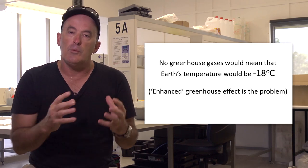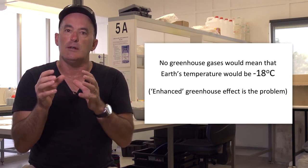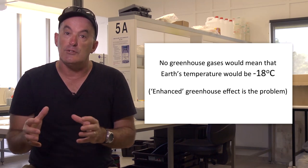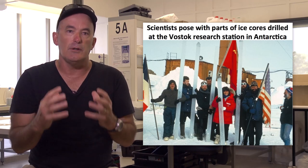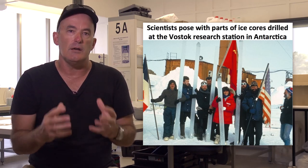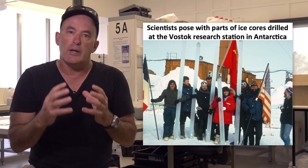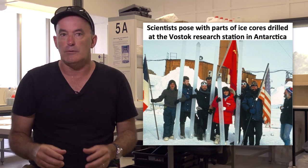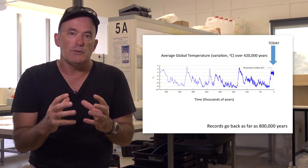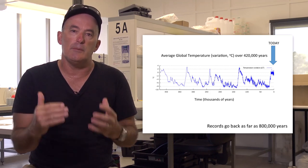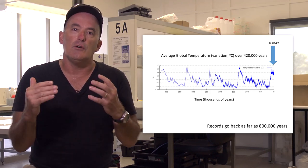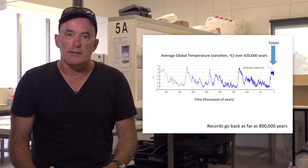However, as we will learn, it's the enhanced greenhouse effect that's causing concerns. Scientists have learned a lot about the variability in the heat balance of the Earth over time from studying long-term records such as ice cores. Using these records, scientists have been able to reconstruct the average global temperature going back 800,000 years at least.